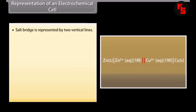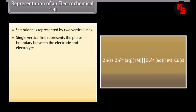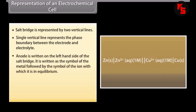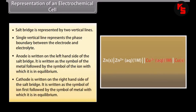Representation of an electrochemical cell. The salt bridge is represented by two vertical lines; a single vertical line represents the phase boundary between the electrode and electrolyte. The anode is written on the left-hand side of the salt bridge — written as the symbol of the metal followed by the symbol of the ion with which it is in equilibrium. The cathode is written on the right-hand side of the salt bridge — written as the symbol of the ion first, followed by the symbol of the metal with which it is in equilibrium.